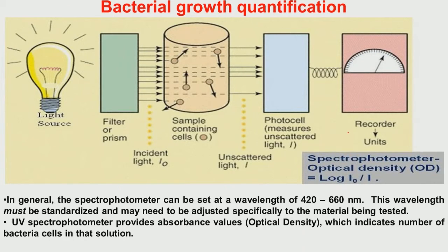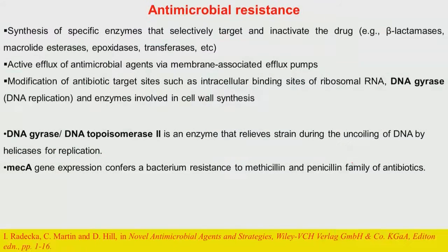To quantify bacterial growth kinetics, one of the most standard and widely used methods is the spectrophotometer. A light ray of certain wavelength is passed through the bacterial growth medium — once without bacteria (blank solution) and once with bacteria in actual growth medium. In both cases, the intensity of the transmitted beam is measured, and optical density is determined by the logarithm of the ratio I₀/I.